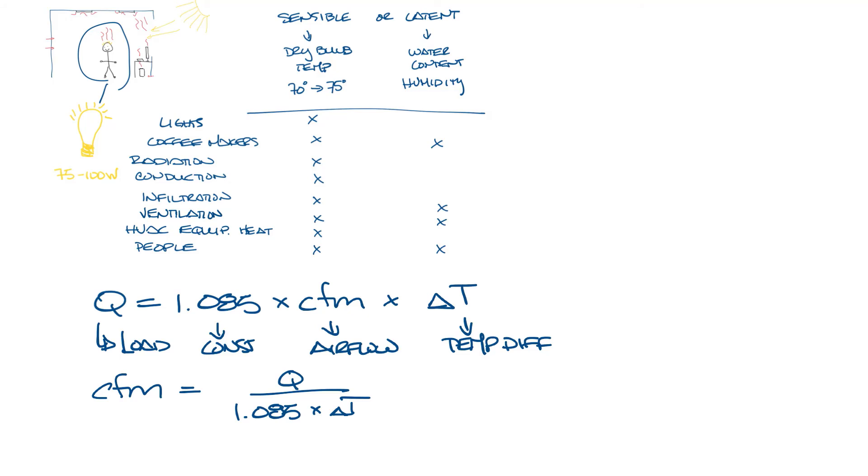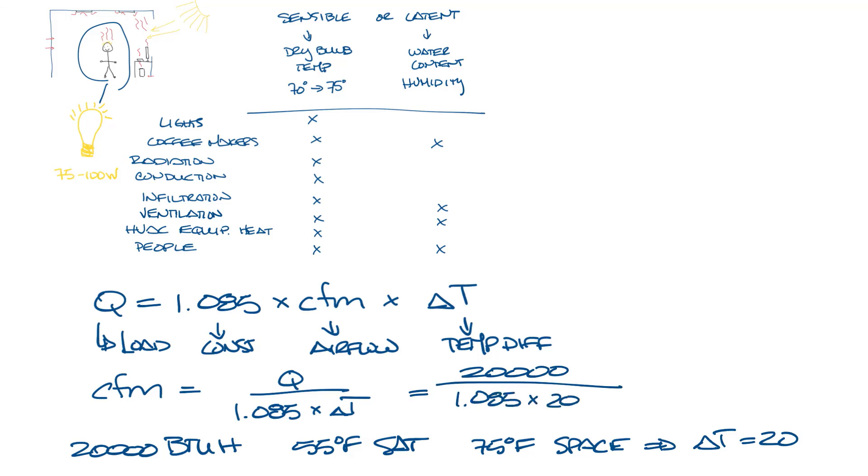Let's say we calculate that the total load of the space is 20,000 BTUs. And if you're supplying 55 degrees supply air, and you want your space to be 75 degrees, then your delta T is 20 degrees. So let's put this in the equation above. Your CFM is equal to 20,000 BTUs divided by 1.085 times 20 degrees delta T, and you get 922 CFM. So now you know that to handle the 20,000 BTU load of the space, if you're using 20 degree delta T air, then you need 922 CFM.